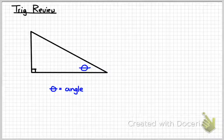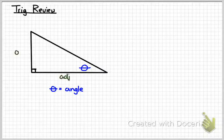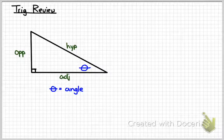From that angle theta, we name the three sides of the right triangle. The side that is part of the angle, but not the hypotenuse, is referred to as the adjacent side. The hypotenuse is obviously the longest side of the triangle. And then the side opposite the angle is called the opposite side.